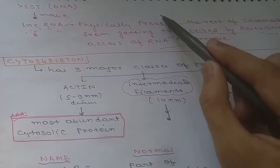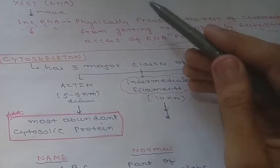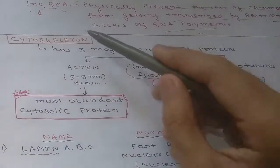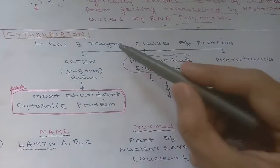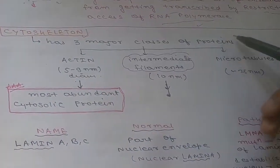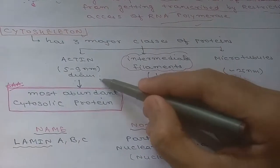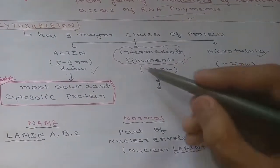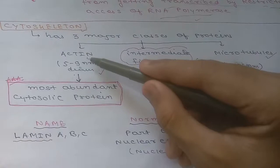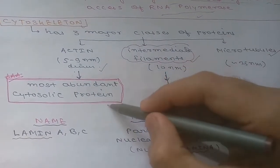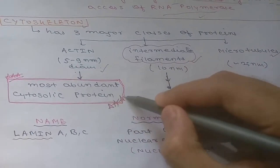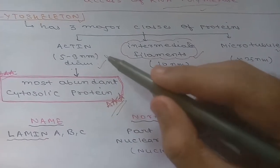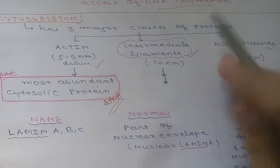Now moving to the cytoskeleton. The cytoskeleton has three major classes of proteins: the first is actin, the second is intermediate filaments, and the third is microtubules. An important point about actin is that it is the most abundant cytosolic protein.